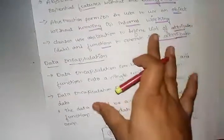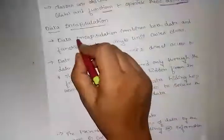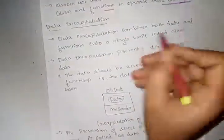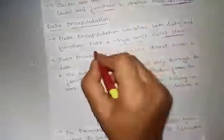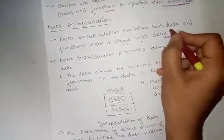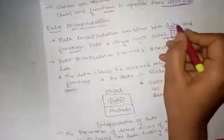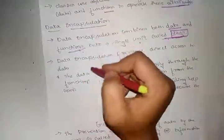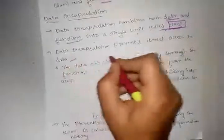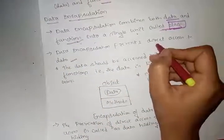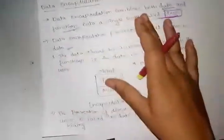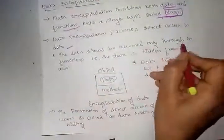The next characteristic is encapsulation. Encapsulation combines both data and functions into a single unit called a class. Data encapsulation prevents direct access to the data. Data should be accessed only through the functions.